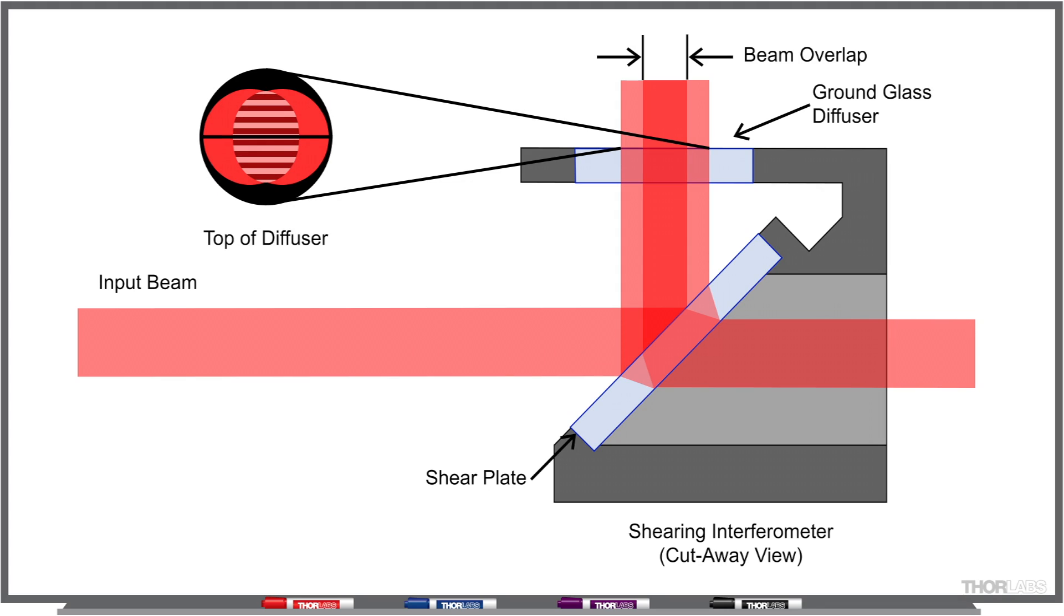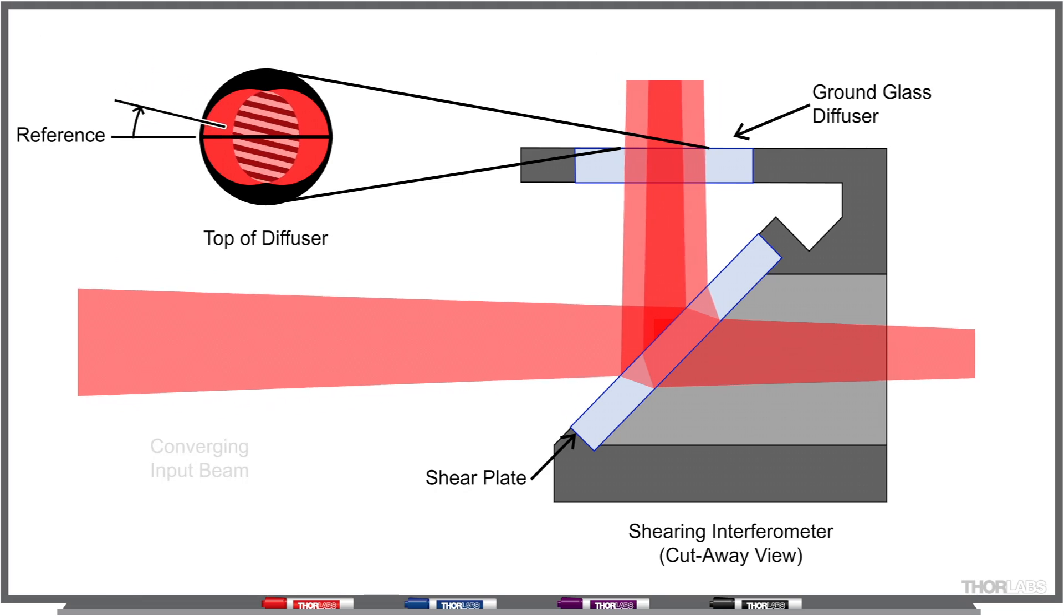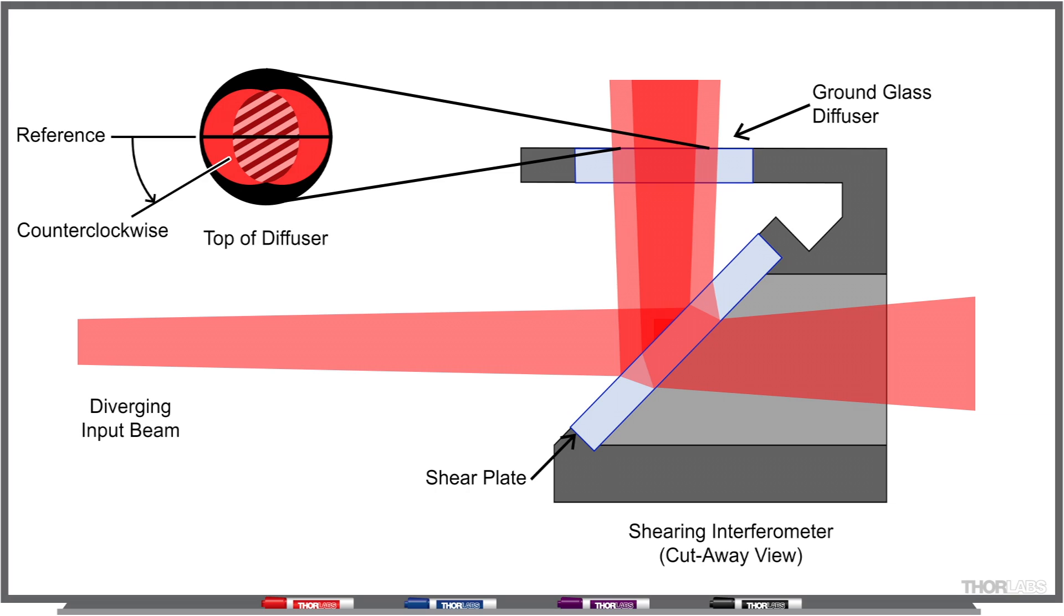We can view that interference pattern on the ground glass plate at the top of the device. We expect to see linear fringes and when the input beam is collimated, the fringes will be aligned with the reference line on the ground glass. As you move away from collimation in either direction, converging or diverging, the fringes will rotate with respect to the reference line.